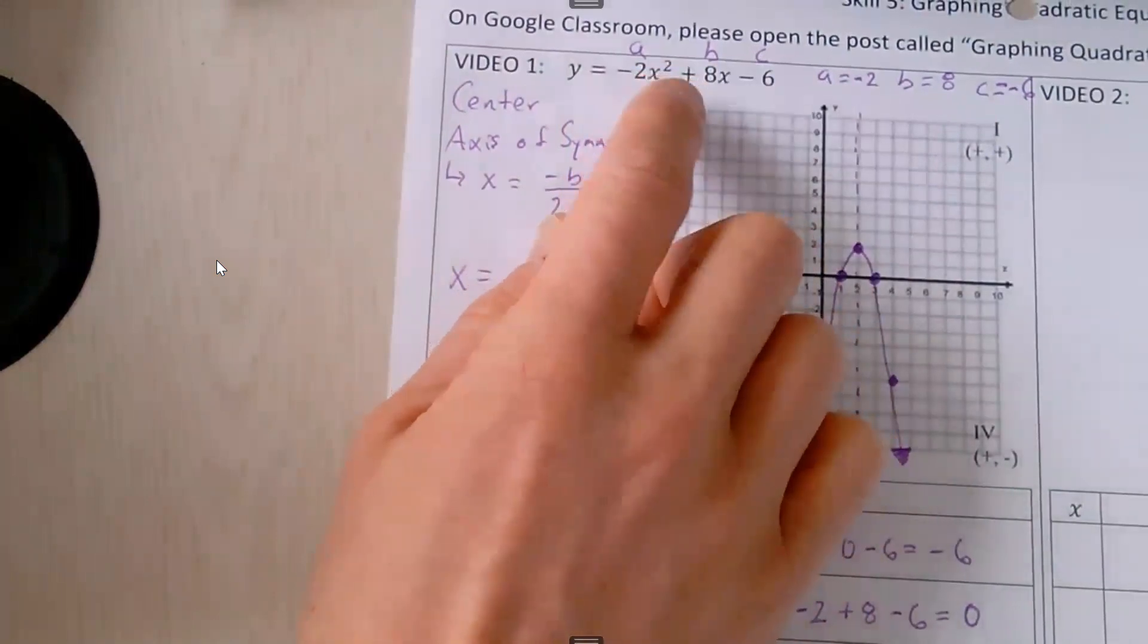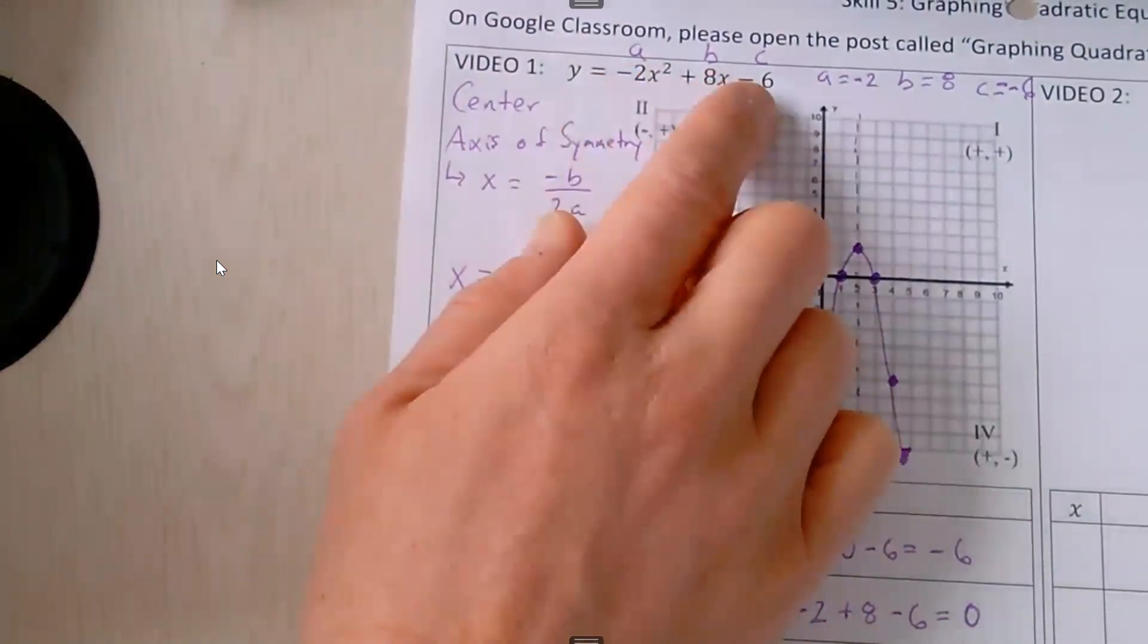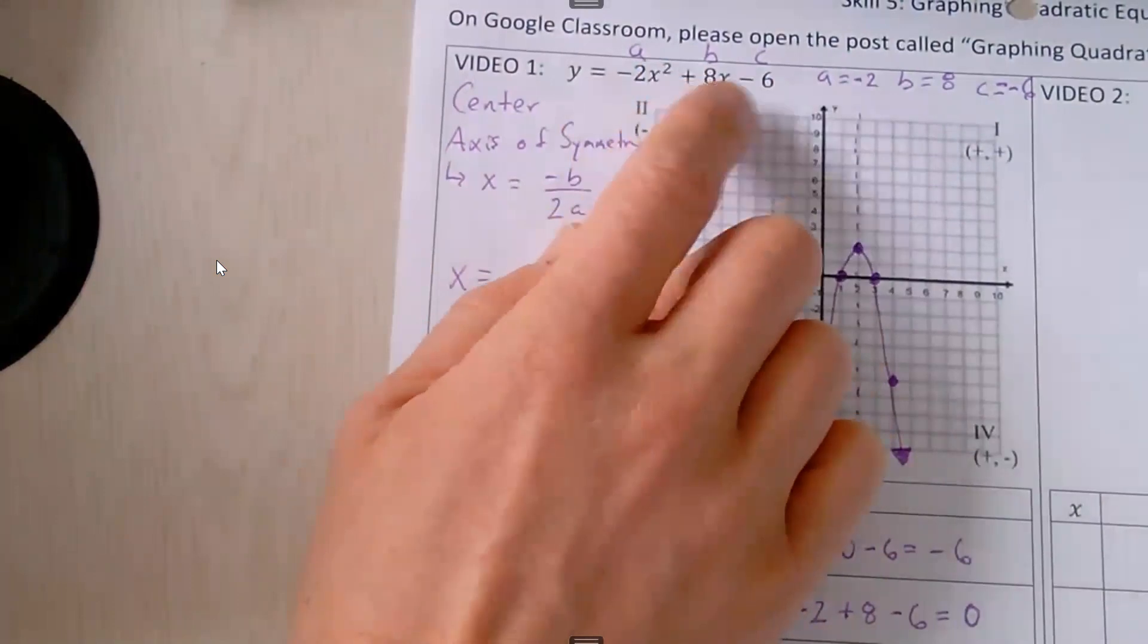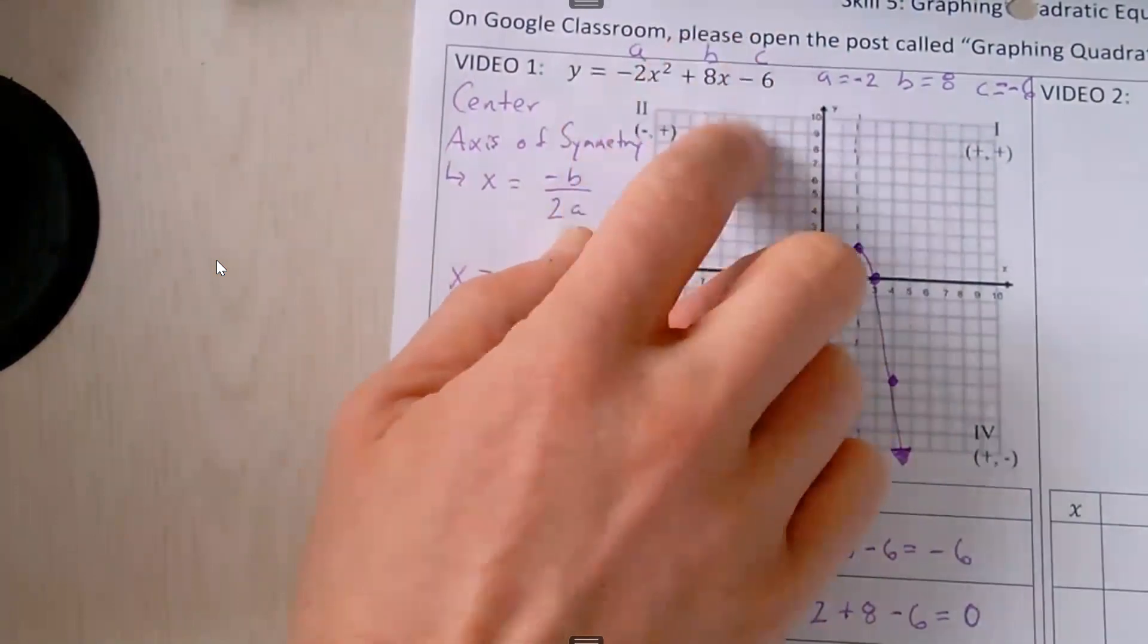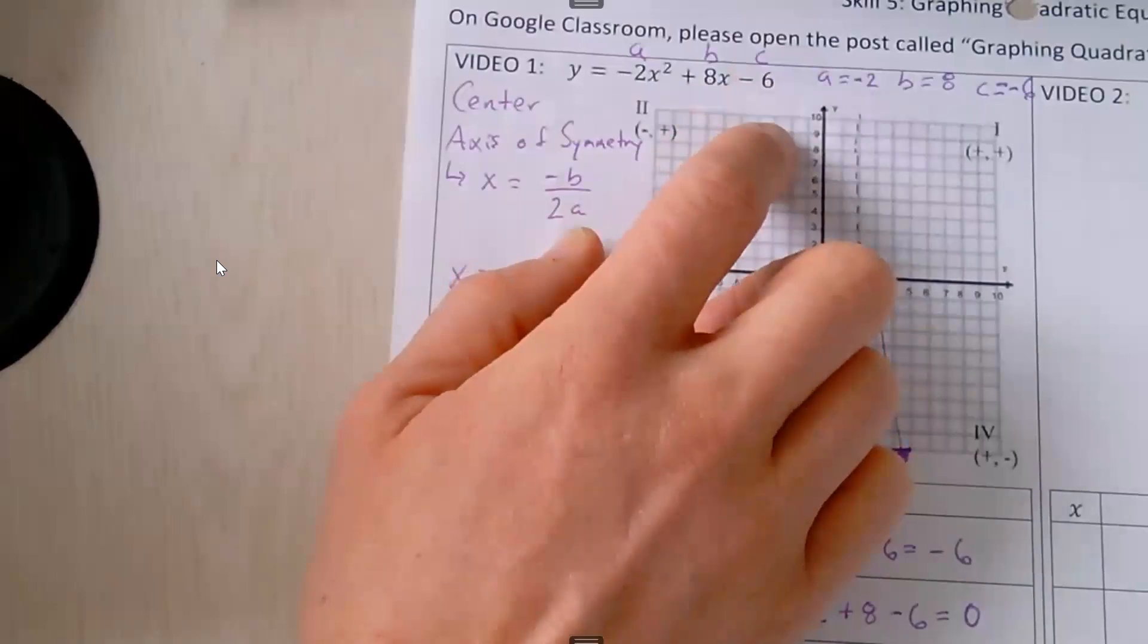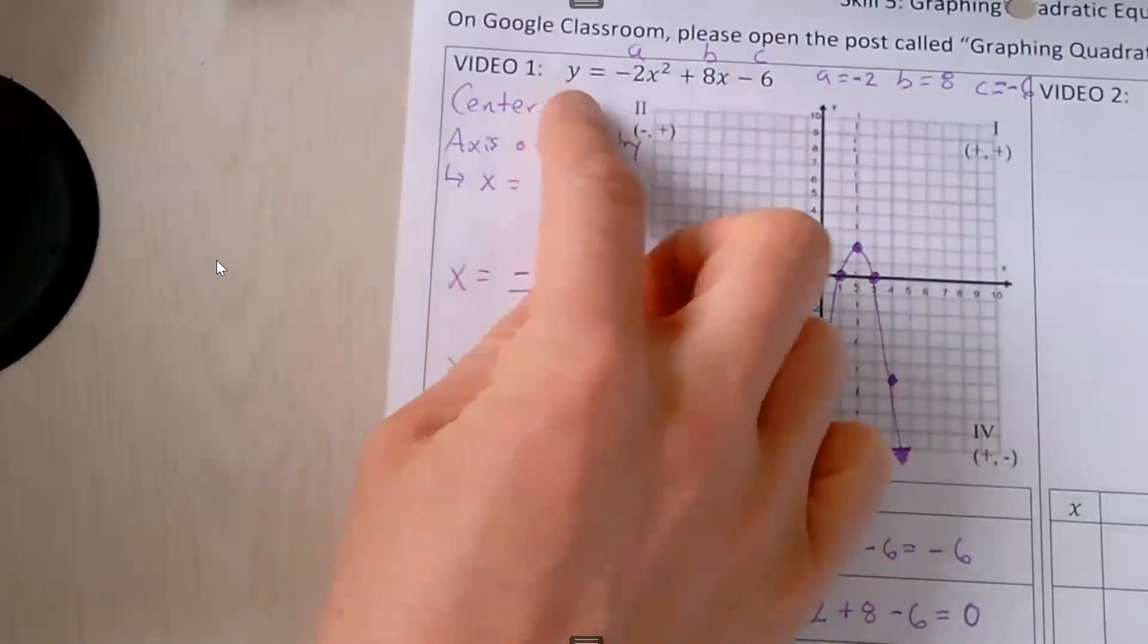Most of the time, a quadratic in standard form will have three terms, but we could have a zero for b and we wouldn't see that, or we could have a zero for c and we wouldn't see that. But standard form is with no parentheses.